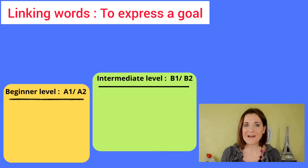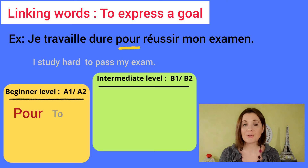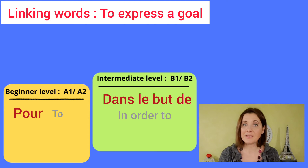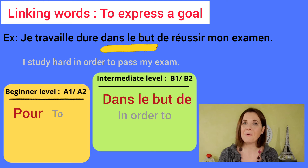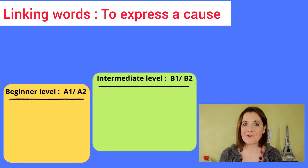Now express a goal. Beginner level: we have pour. Je travaille dur pour réussir mon examen. Intermediate level: dans le but de, meaning 'in order to.' Je travaille dur dans le but de réussir mon examen.